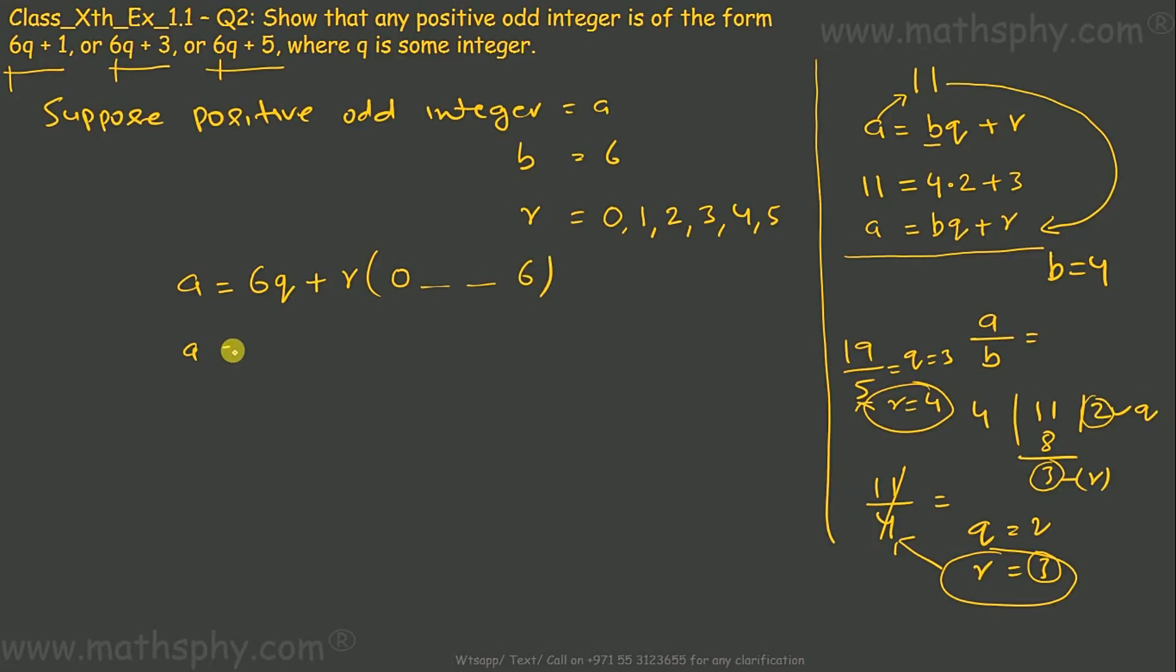So that a equals 6q when r is 0, a equals 6q+1 when r is 1, a equals 6q+2, a equals 6q+3, a equals 6q+4, a equals 6q+5. So I have these six options available: a equals 6q till a equals 6q+5.